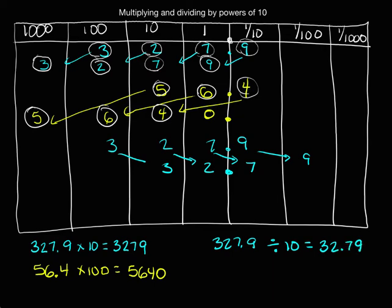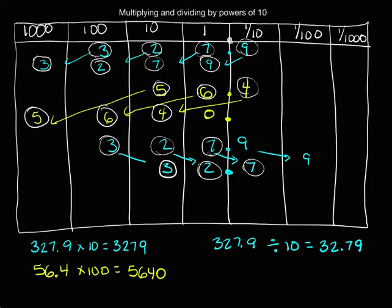I can talk about the value of my digits. Three tens is one tenth the size of three hundreds. Two ones is one tenth the size of two tens. Seven tenths is one tenth the size of seven ones.